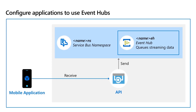We can configure any application to talk to Event Hub by using the connection string of Event Hub. In the lab, we will copy the connection string, go to the simulator running on our laptop, and in the configuration file of the simulator, we will give the connection string. When we run it, it will start posting data to the Event Hub.